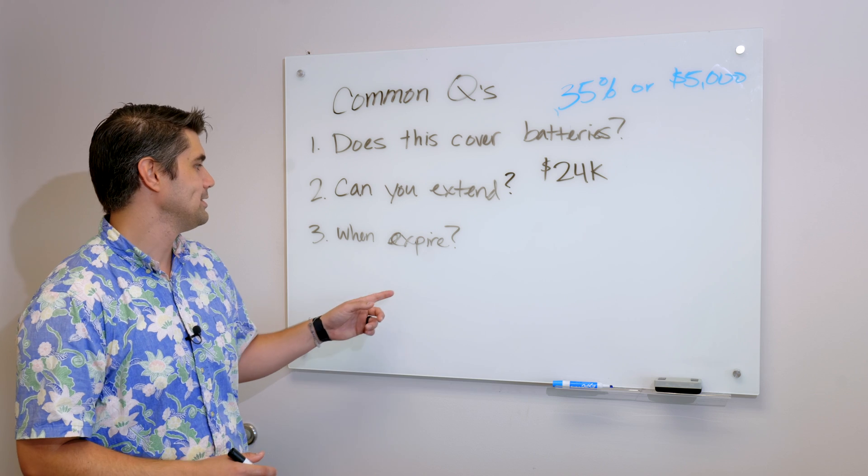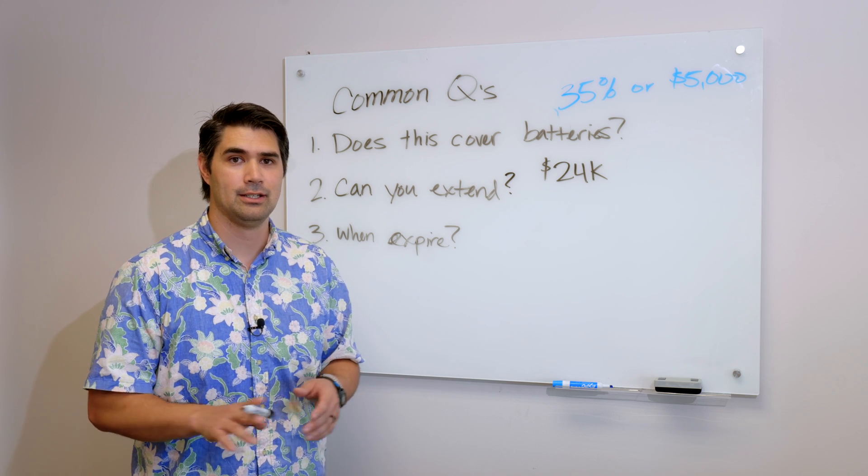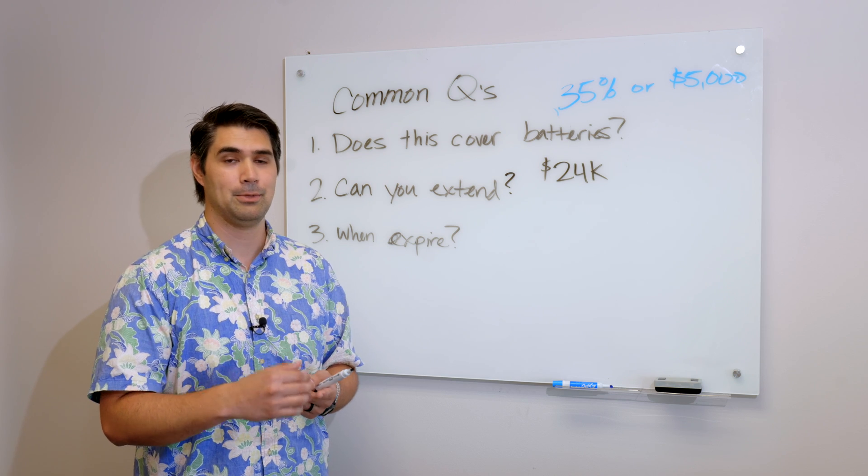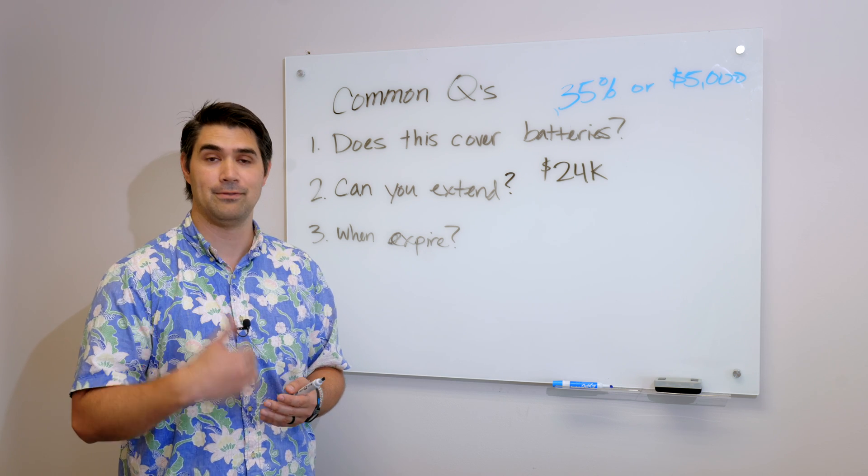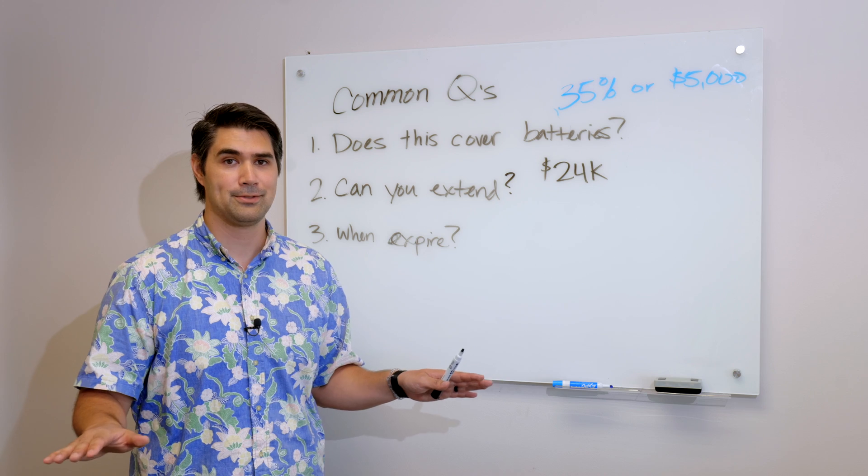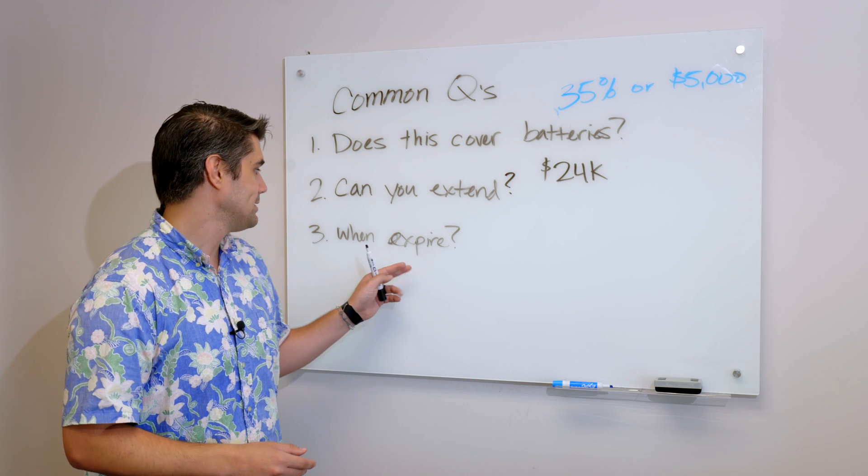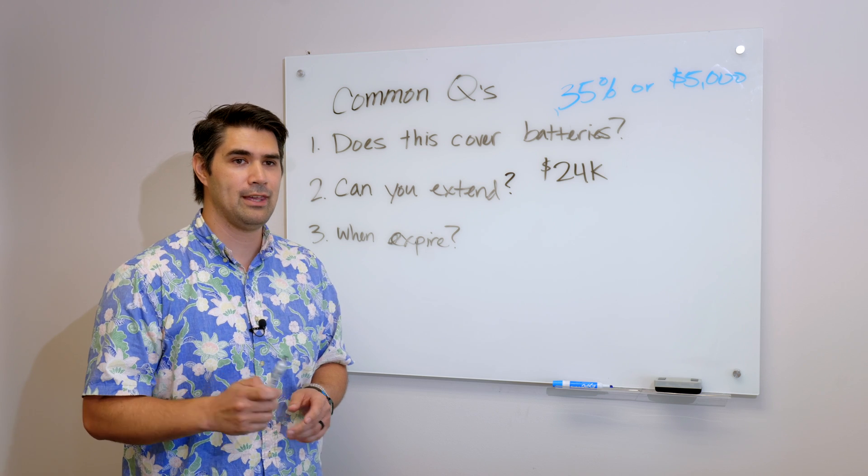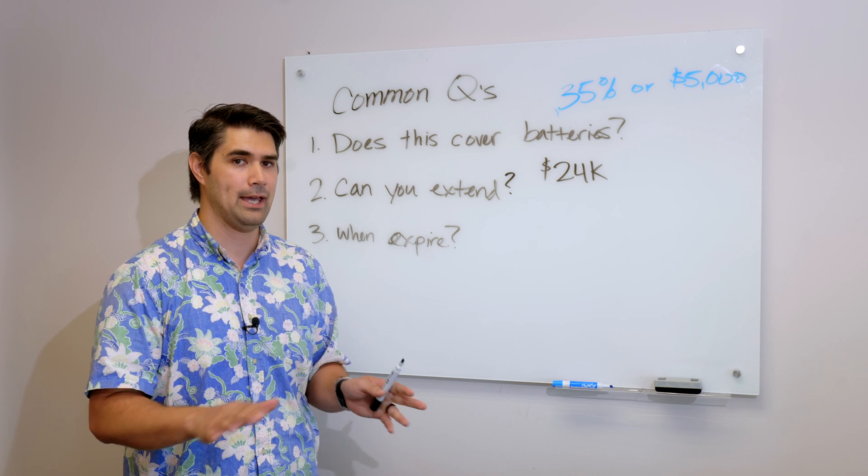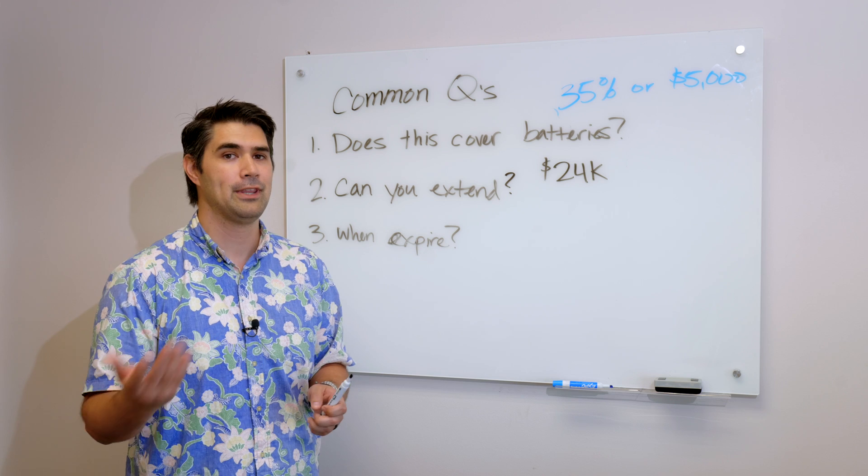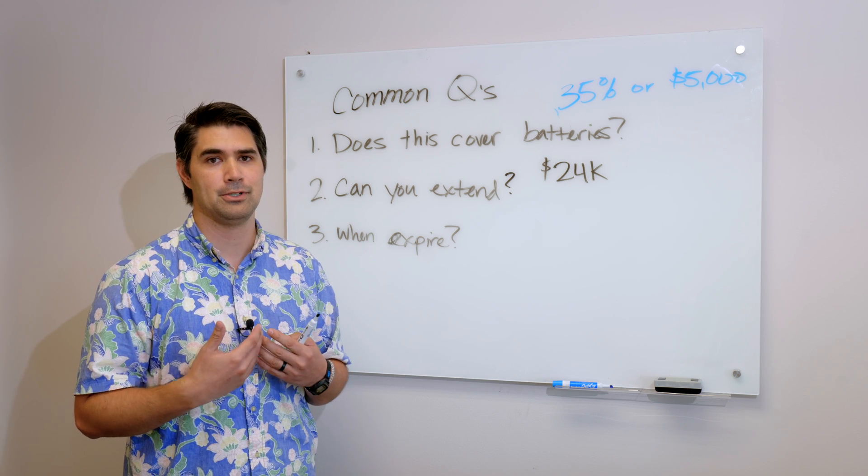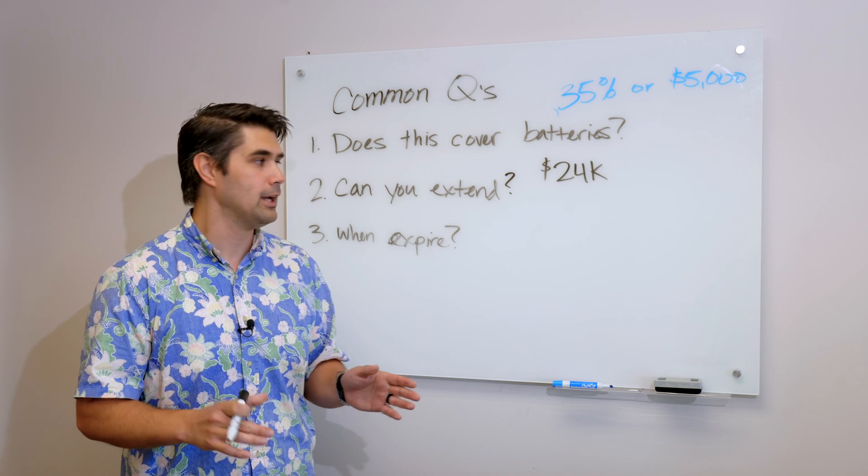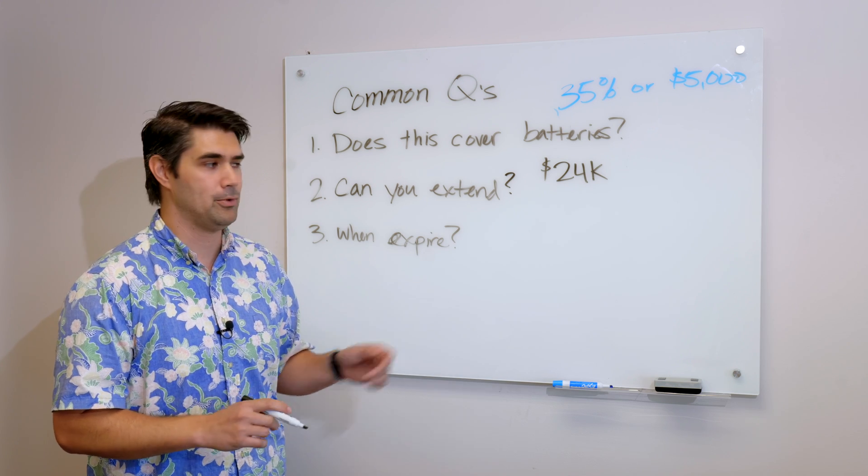Third question, when does the state tax credit expire? It has no expiration date. And so unlike the federal tax credit, which is set to be reduced to 22% at the end of this year, and then it's set to go away as far as residential is concerned after that, this tax credit does not expire. But it should be noted that they've tried to decrease the tax credit. It hasn't passed yet. And I hope that they don't decrease it because the state has a renewable energy goal to be 100% renewable by 2045. And this state tax credit really helps us to get to that point.